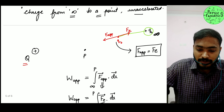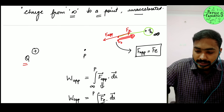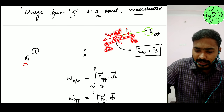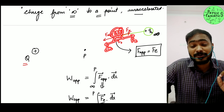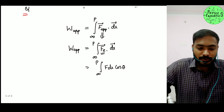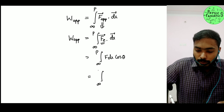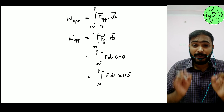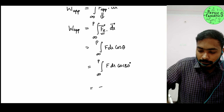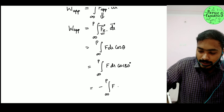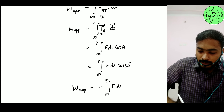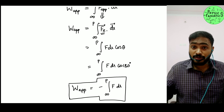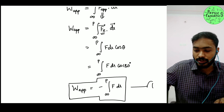Expanding the dot product: work done equals the integral from infinity to P of F dr cos θ, where θ is the angle between the electric force vector and the displacement vector. From the diagram, the electric force is in one direction and the displacement of the charge is in the opposite direction, so the angle between them is 180°. Since cos(180°) = −1, work done by the applied force equals minus of the integral from infinity to point P of F dr.